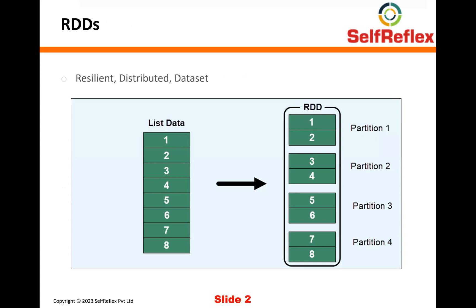Distributed, as the name suggests, means that your data is going to be distributed across the nodes in your cluster. And data set means that it contains data.